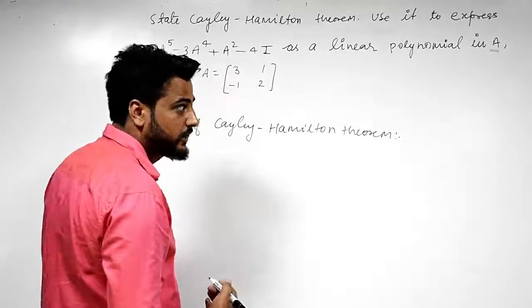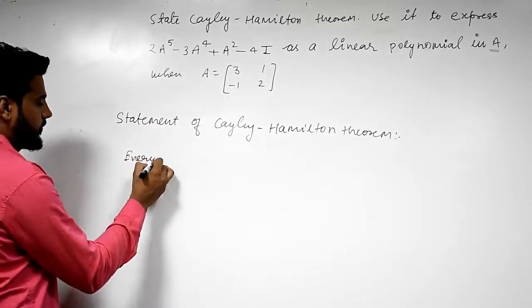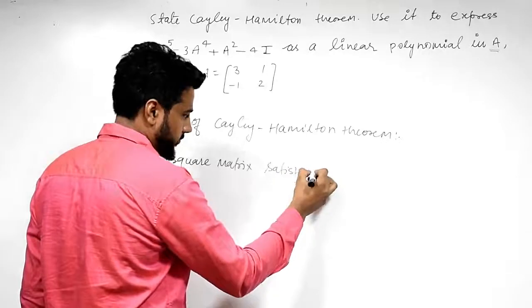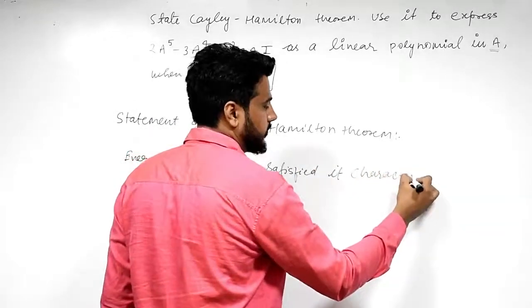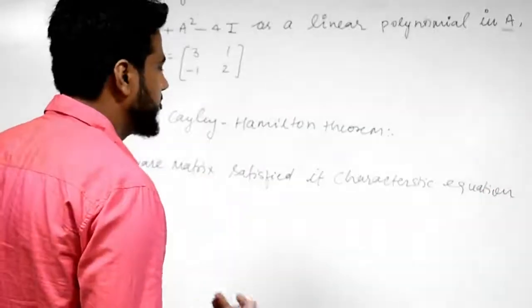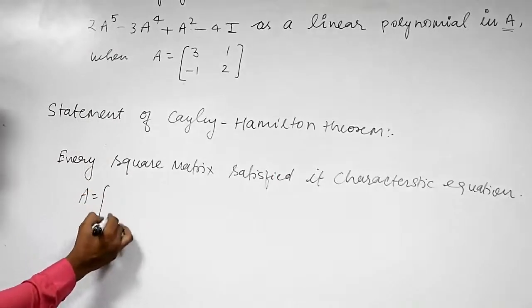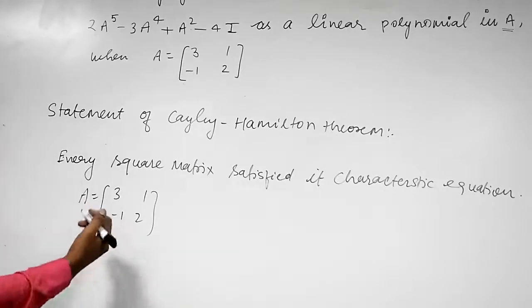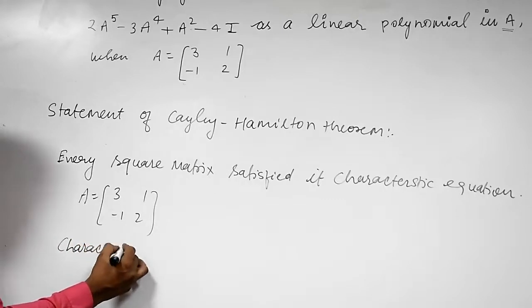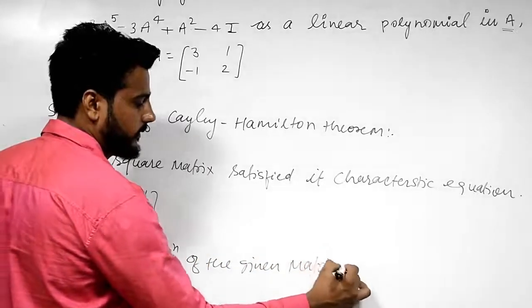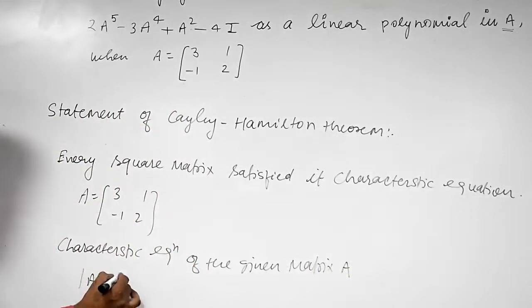So first of all we will find the characteristic equation of the given matrix. By the Cayley-Hamilton theorem, every square matrix satisfies its characteristic equation. The characteristic equation of the given matrix A is: determinant of (A minus lambda I) equals 0.